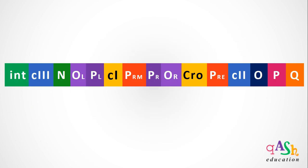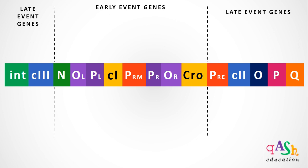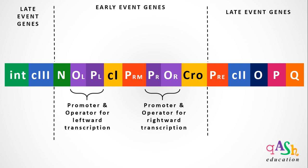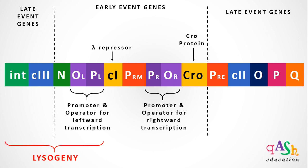This is a representation of the lambda phage genome. For the ease of understanding, we have split it into three sections: late event genes and two regions flanking an early event gene. PL and OL are the promoter and operator sequences for leftward transcription. PR and OR are the promoter and operator sequences for rightward transcription. The CI gene, required for the establishment of lysogeny, codes for the lambda repressor protein. The Cro gene, required for the establishment of the lytic cycle, codes for the Cro protein. Everything to the left of PL codes for genes required for the establishment and maintenance of lysogeny. Similarly, all the genes to the right of PR and OR are required for the establishment and maintenance of the lytic cycle.